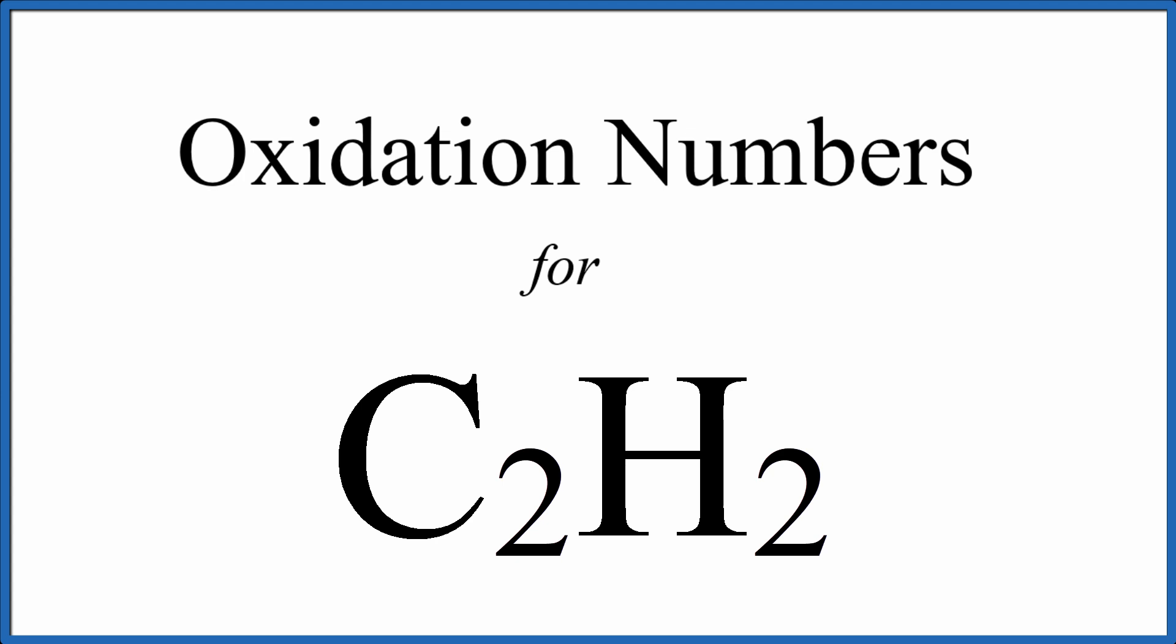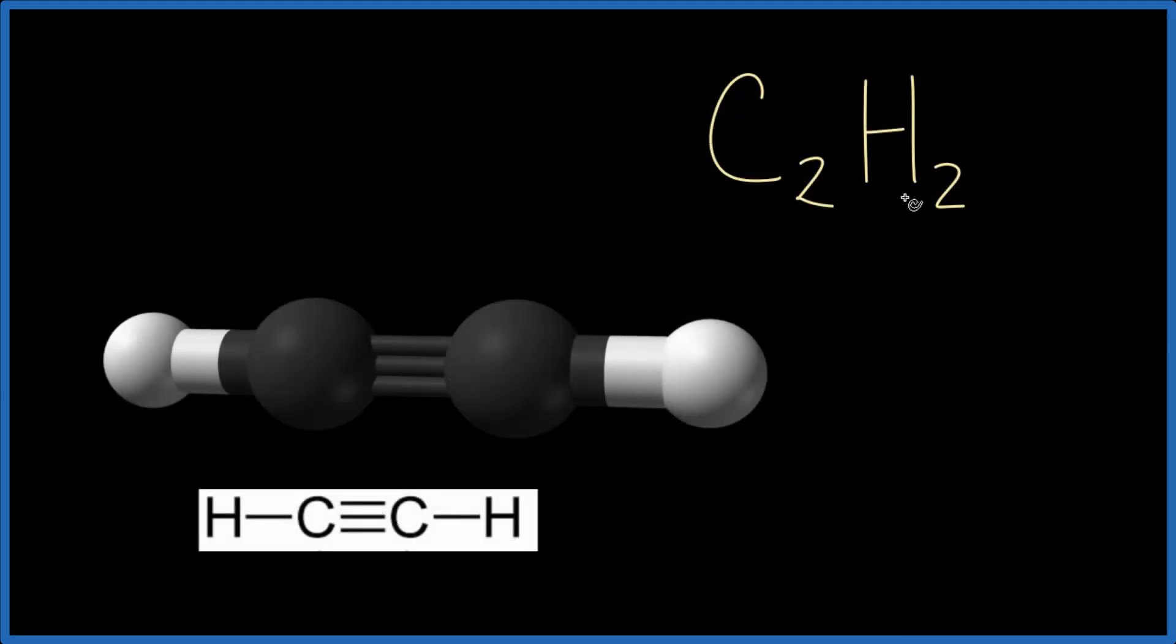We know that C2H2 is a neutral molecule because if we add up all the oxidation numbers, they'll be zero. And we know it's neutral because there's no plus or minus written up here. So let's figure out the oxidation numbers for each of these elements here in C2H2.